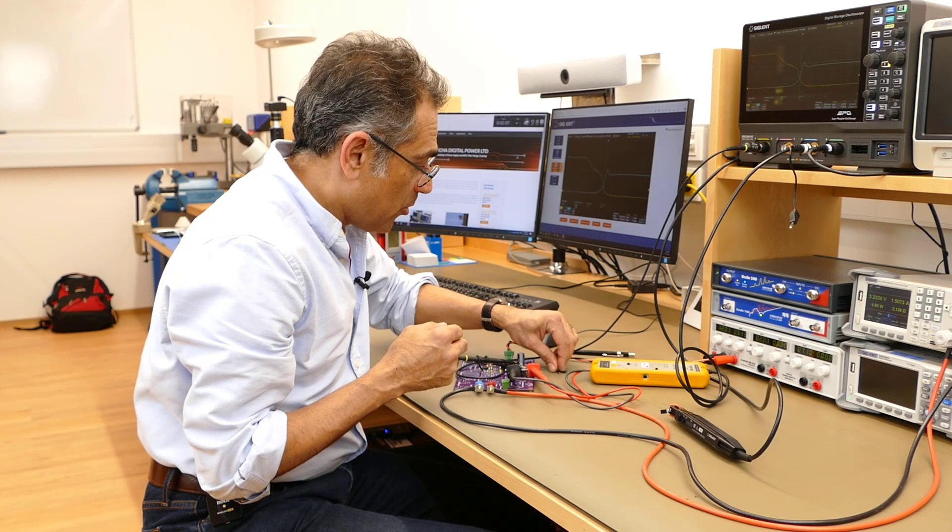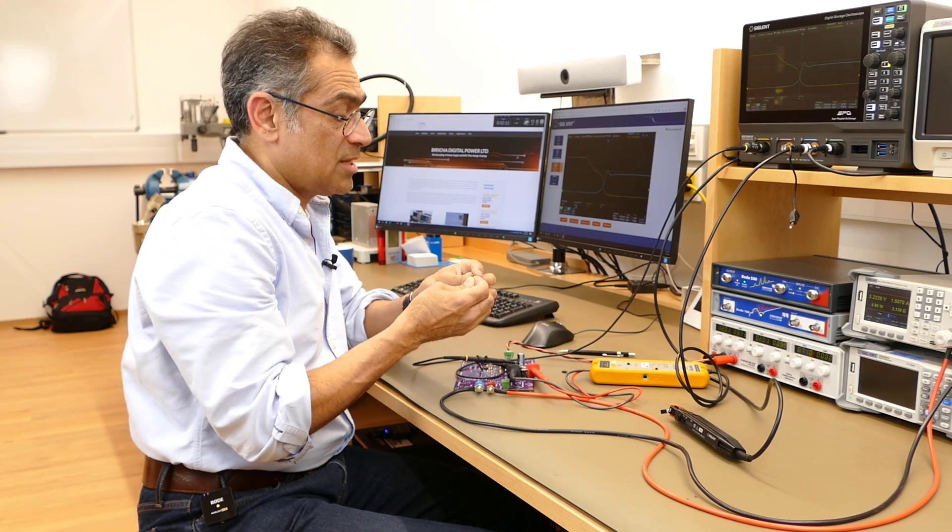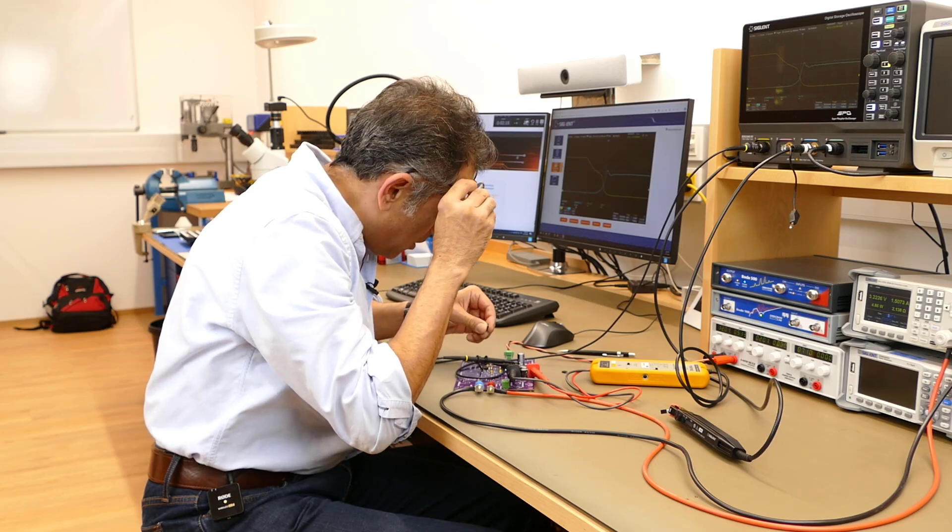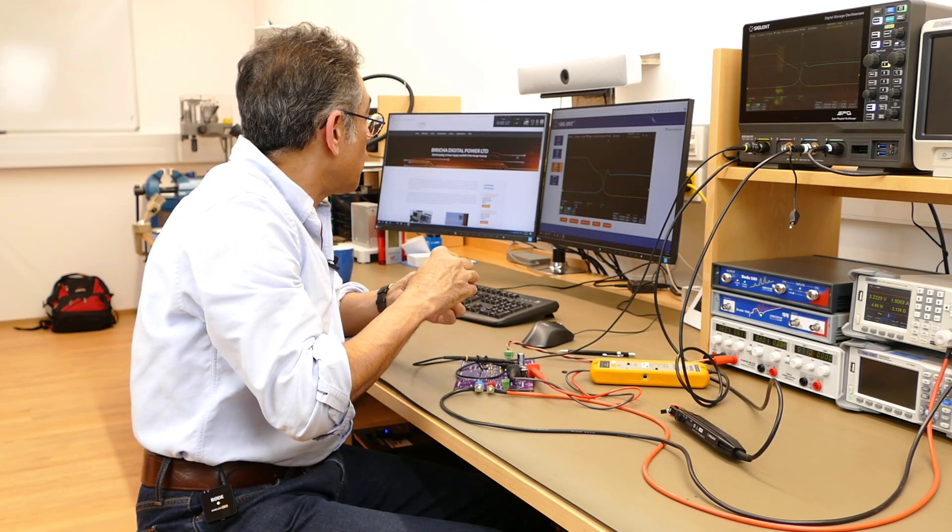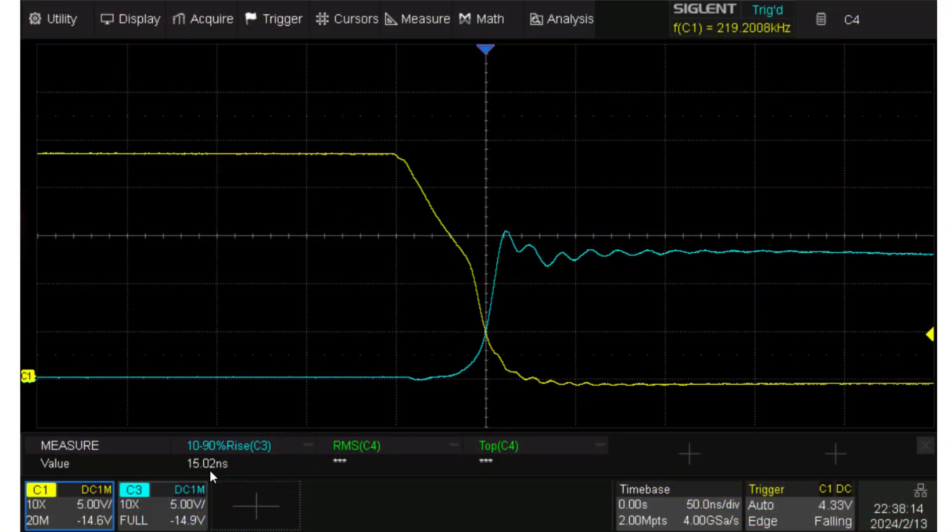So now I'm going to take a diode and resistor combination just like we discussed and I'm going to put it on in parallel with the turn-on resistor and we should see that the rise time is going to get a hell of a lot faster. There we go. You can clearly see it rising faster here and of course the rise time is displayed at around 15 nanoseconds.